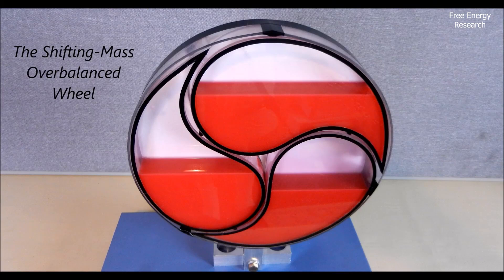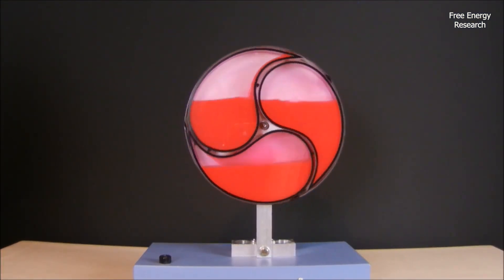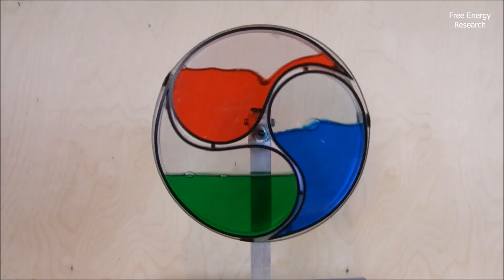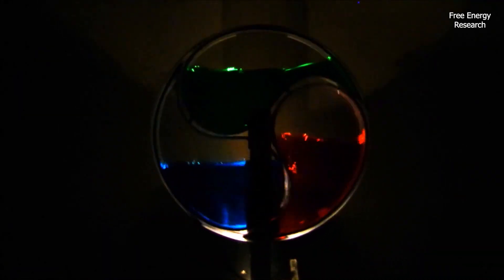Welcome. Today, we're building a fascinating overbalanced wheel, a concept that has intrigued inventors for centuries. This model uses shifting liquid to create an imbalance, making it appear as though the wheel keeps spinning on its own.